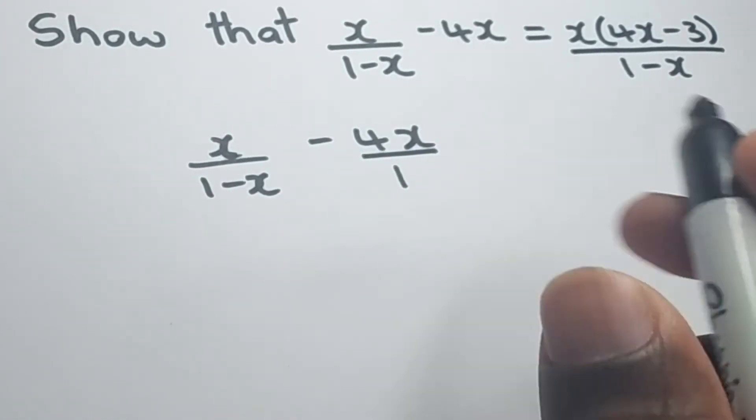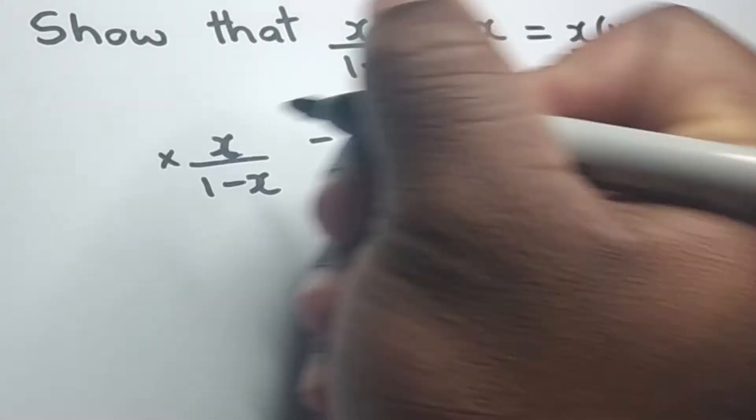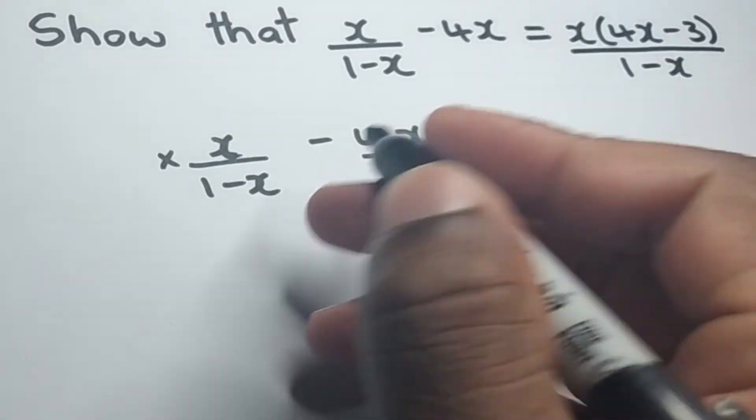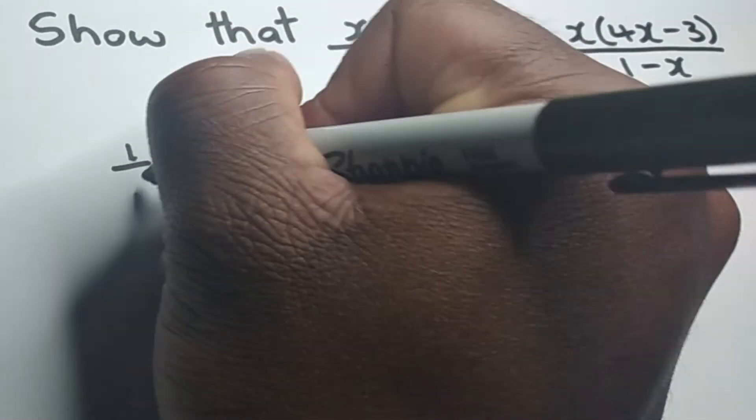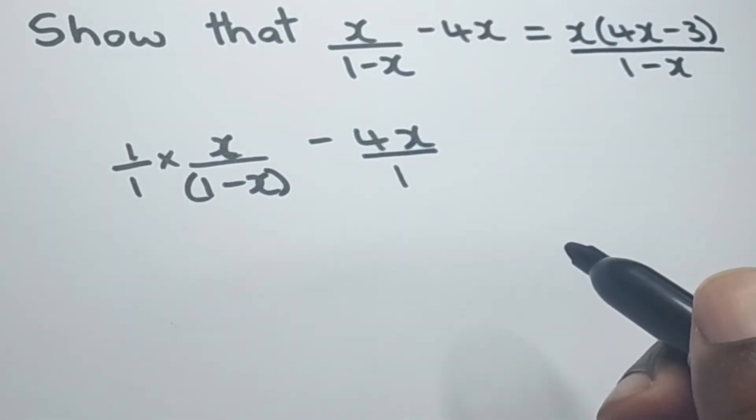What we can now do to obtain common denominators is to multiply this side. If we have 1 in the denominator over here, we can multiply over here by 1 over 1. Let's keep this denominator here in bracket just to be safe.